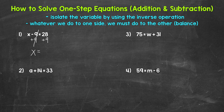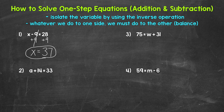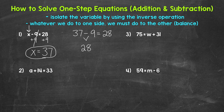So x equals, and then on the right side of the equation, we have 28 plus 9. That gives us 37. So x equals 37 — that's the solution of this equation. Now, we can always check to see if we are correct. All we need to do is plug in what we got and see if it works. Plug in 37 for x: 37 minus 9 equals 28. 37 minus 9 is 28, so we are correct. x equals 37.